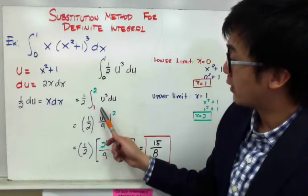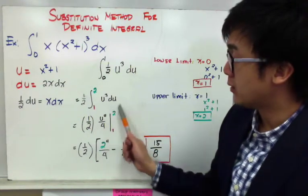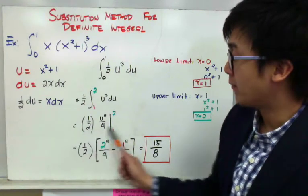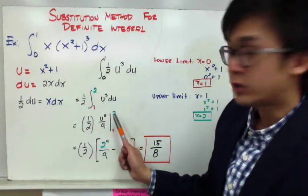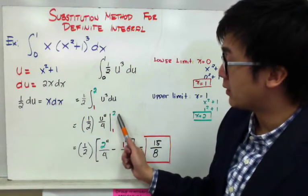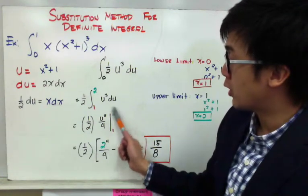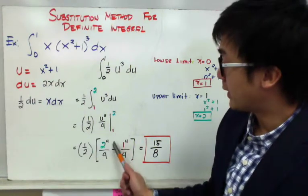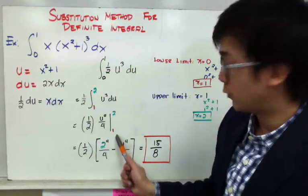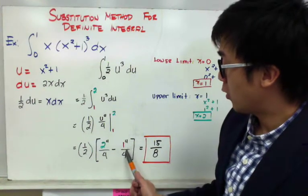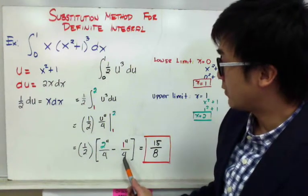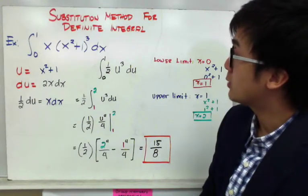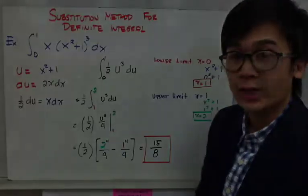Now that we have updated the limits to match our u function, we integrate: u to the fourth all over 4, times one-half, evaluated from 1 to 2. Substituting the limits, we get 2 to the fourth over 4 minus 1 to the fourth over 4, which gives us 15 over 8. This is how we use the substitution method for definite integration.